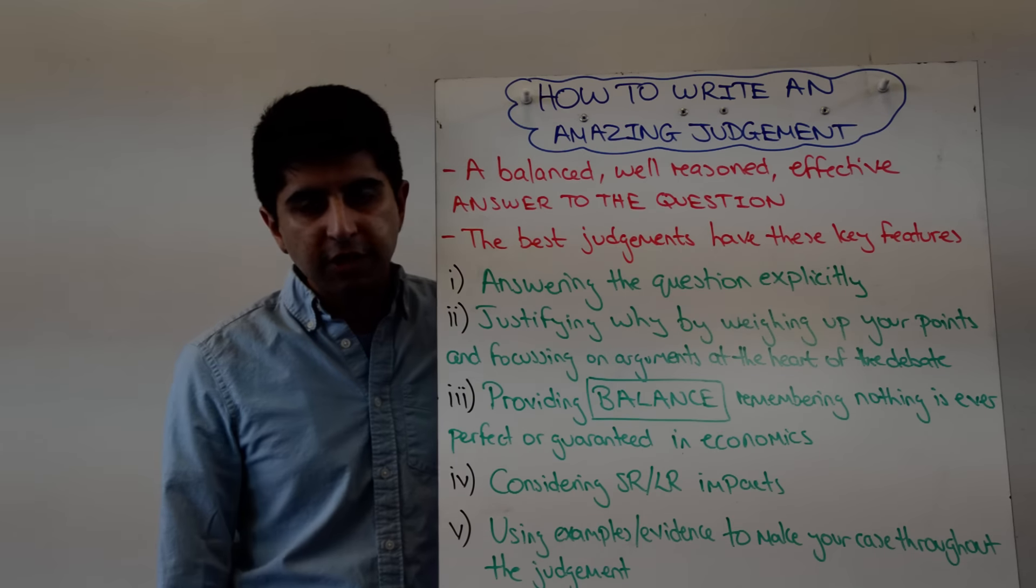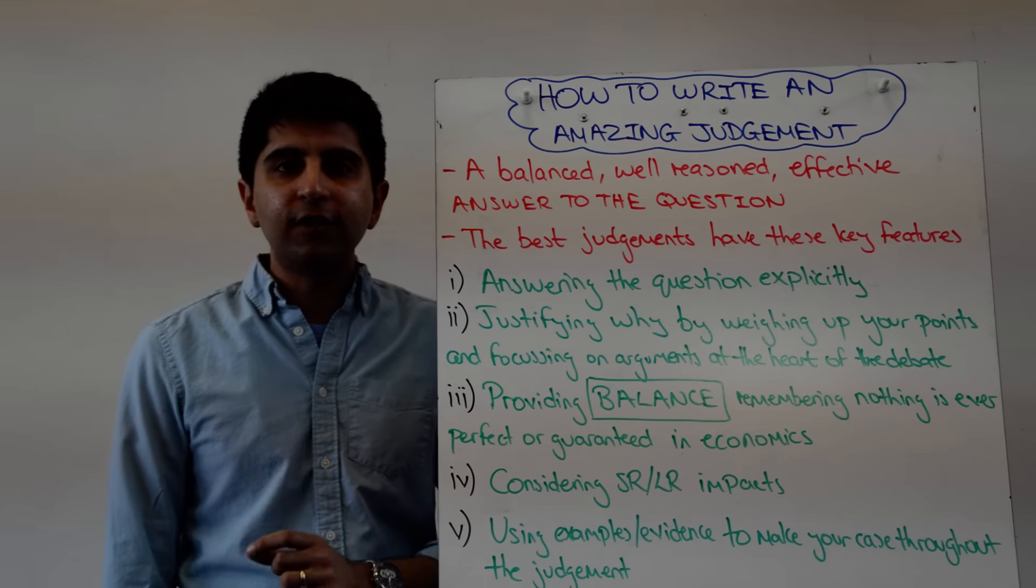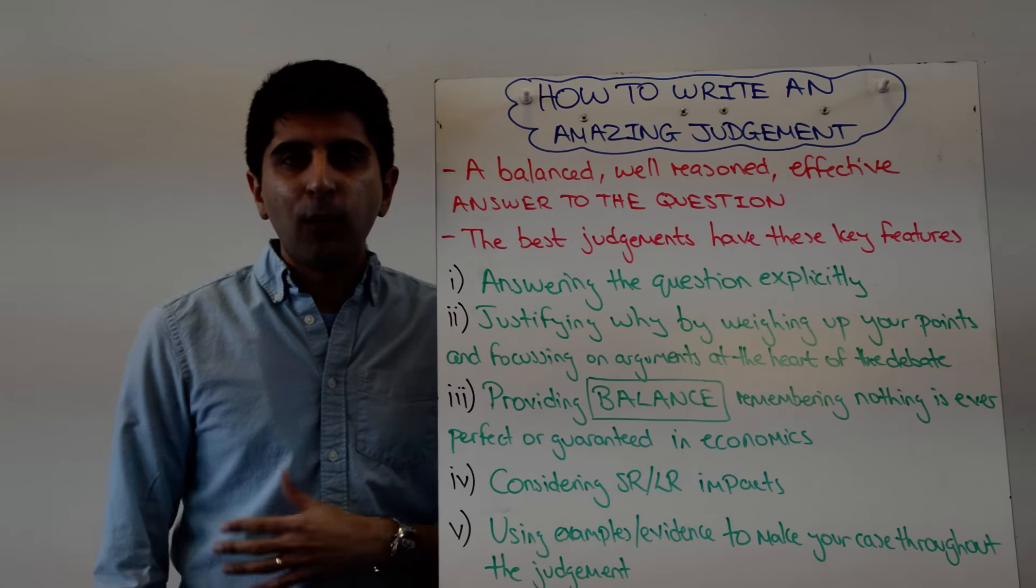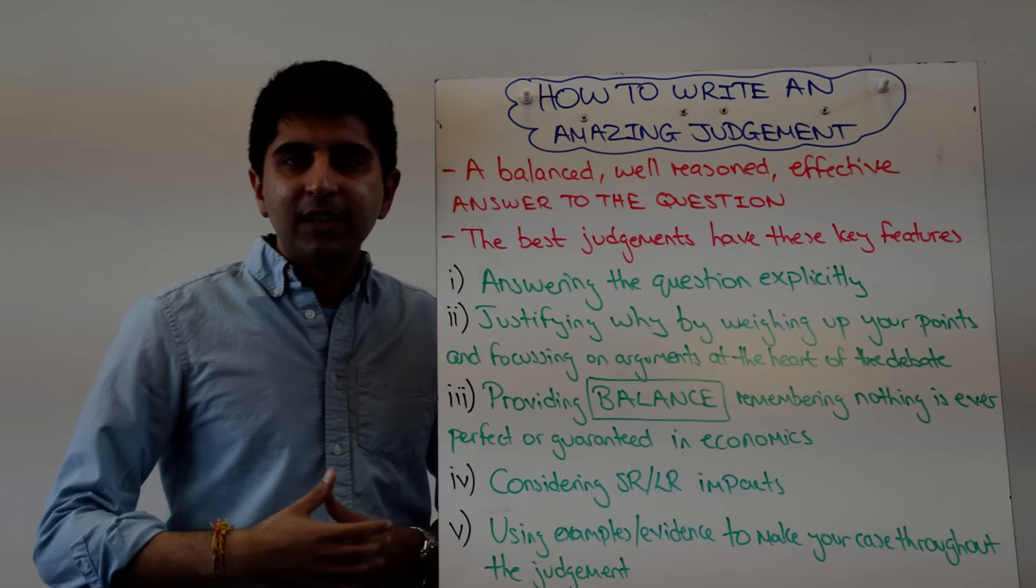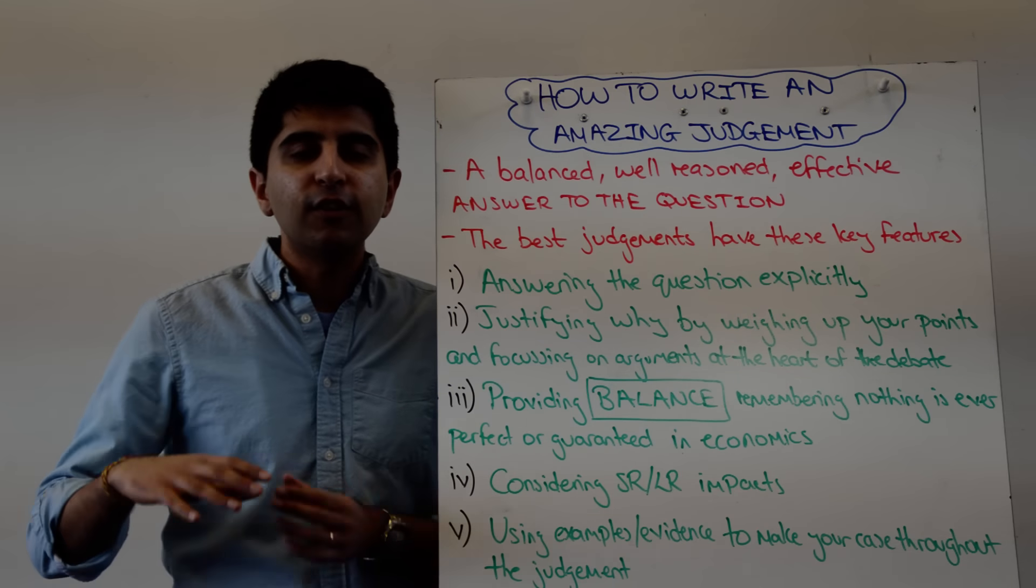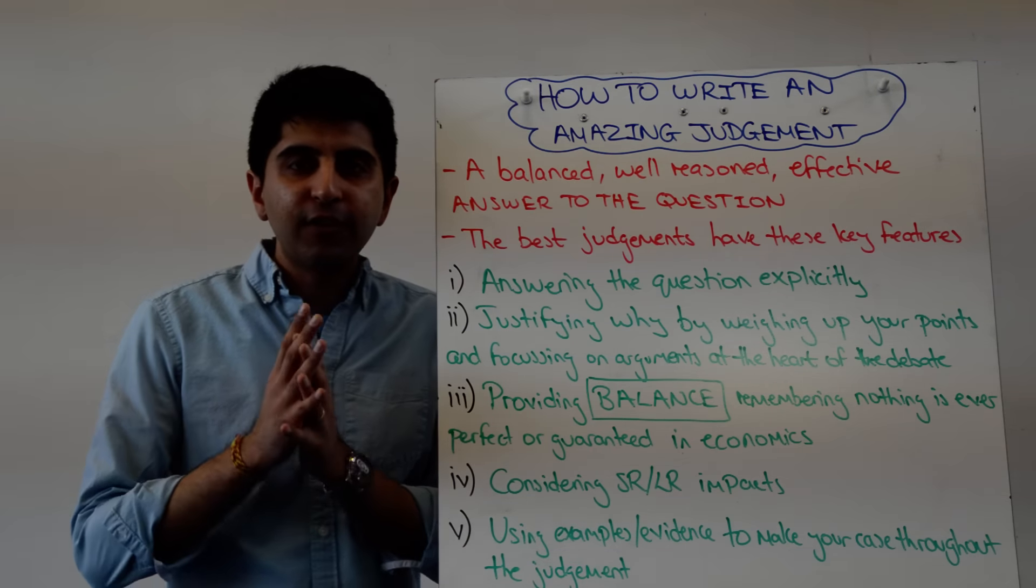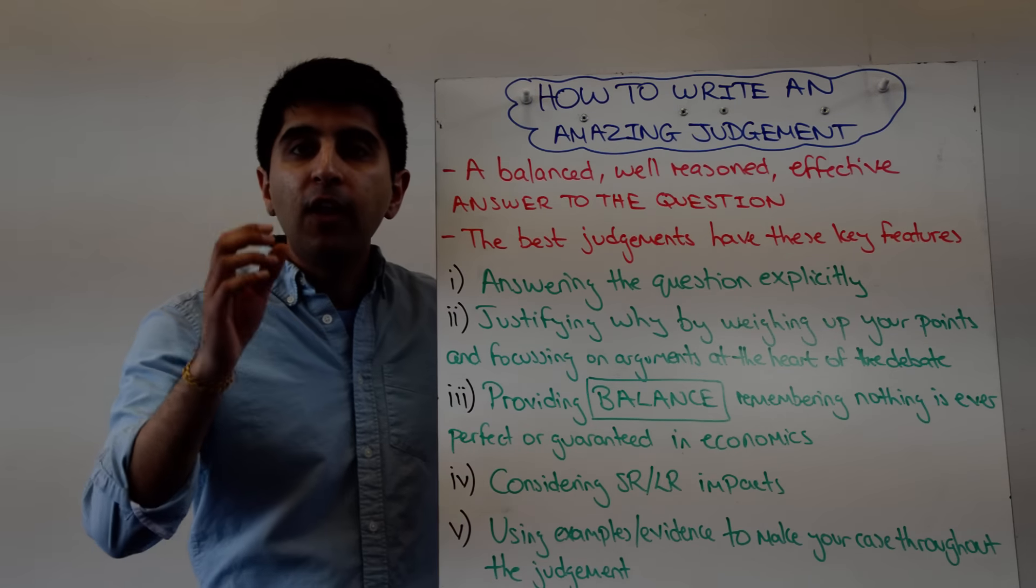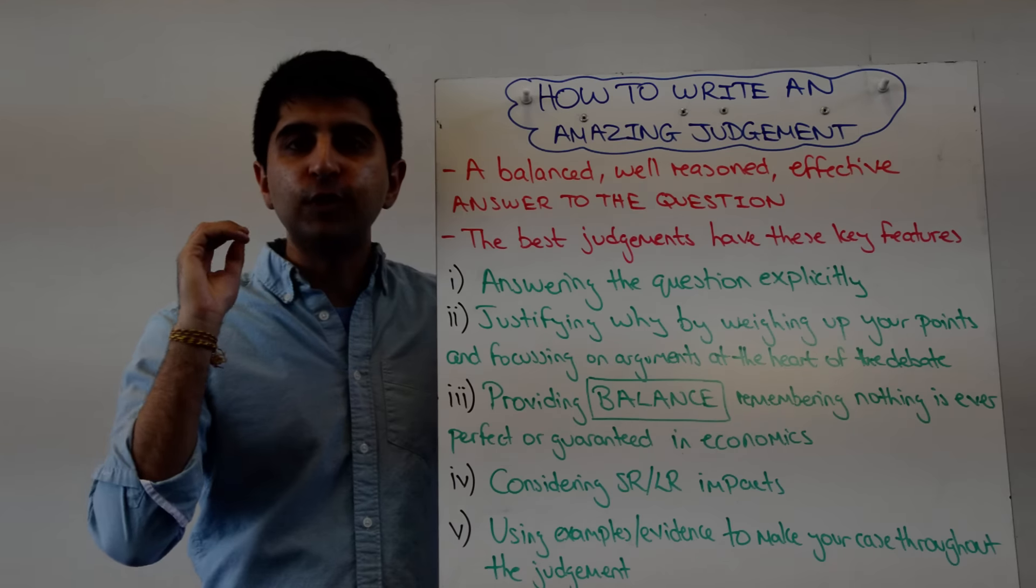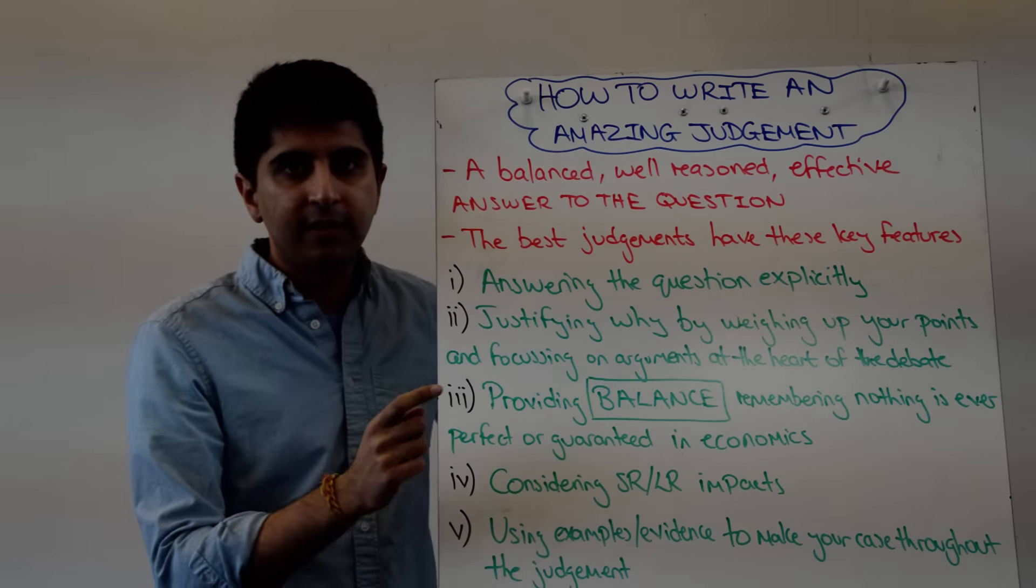Start by answering the question explicitly. Lots of students are scared to do this because they think after a year or two, they don't have the economic know-how to explicitly get off the fence. Don't worry about it. Answer the question explicitly. As long as you do number two and justify why, the examiner will love you and score you top marks.